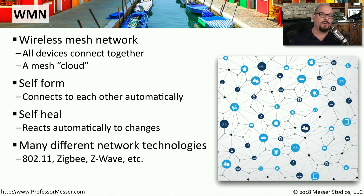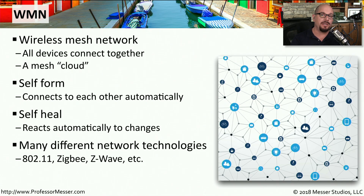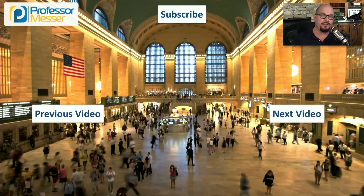You'll find a few different types of WMN networks in your home. There are certainly 802.11, which has many new technologies coming out for mesh networking. There's also ZigBee and Z-Wave networking technologies. So depending on the type of internet of things devices you're using, you may be using one or more of these to provide this mesh network.